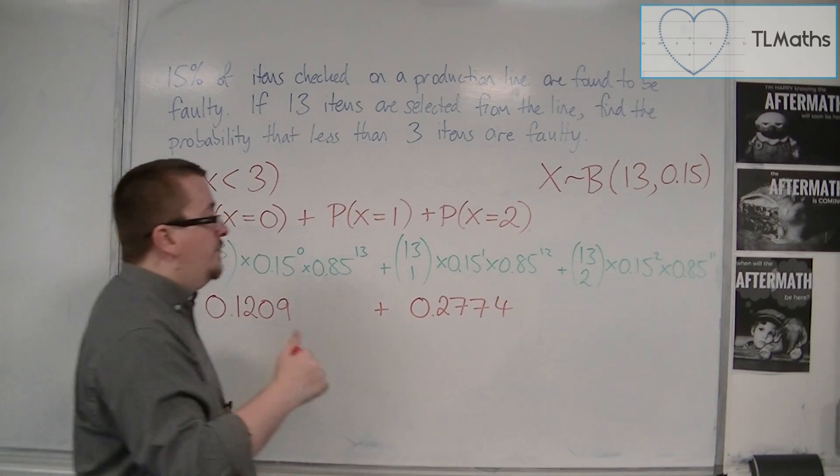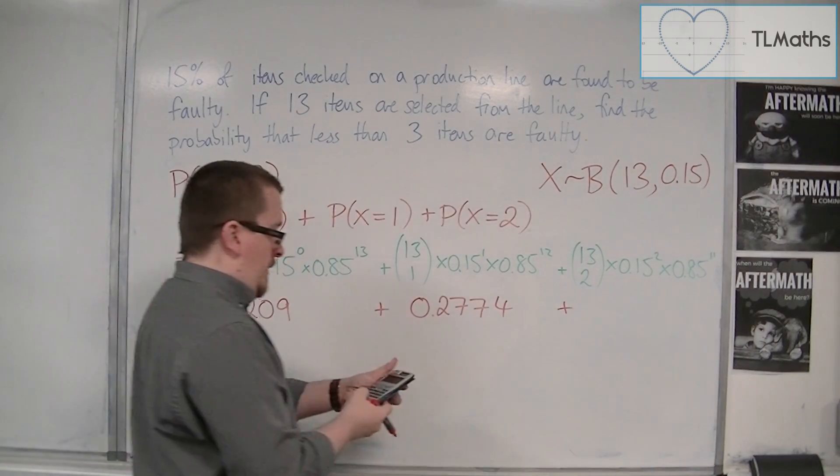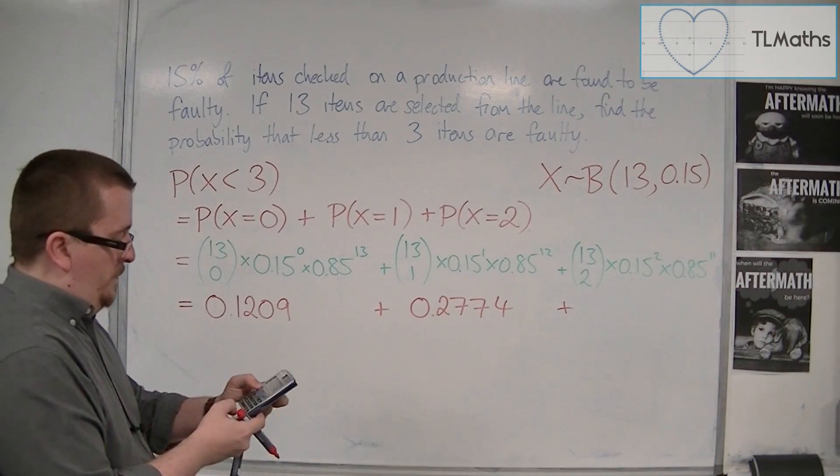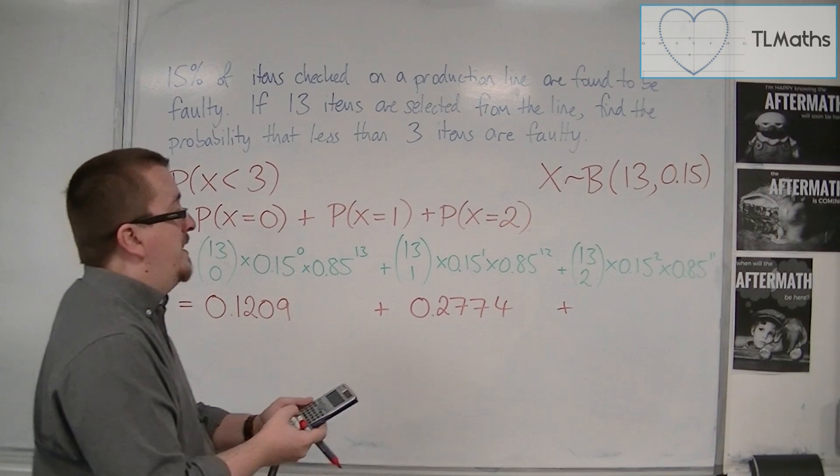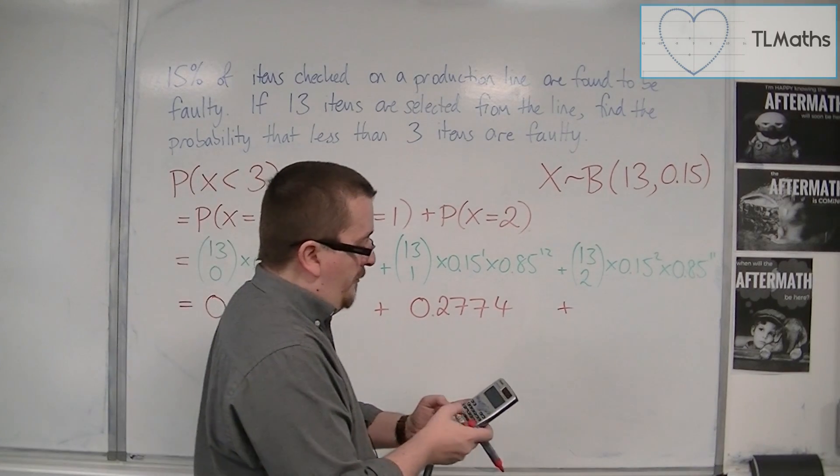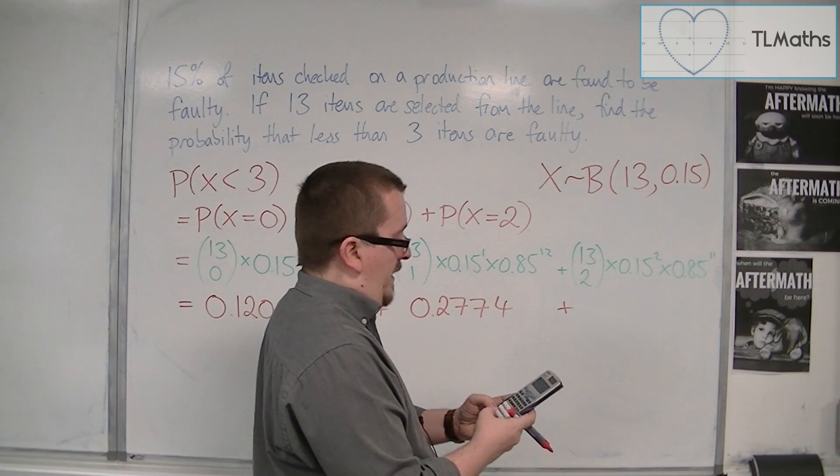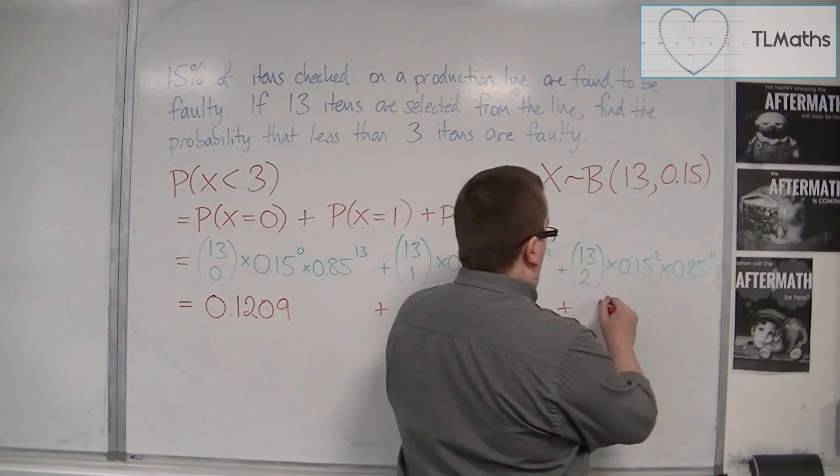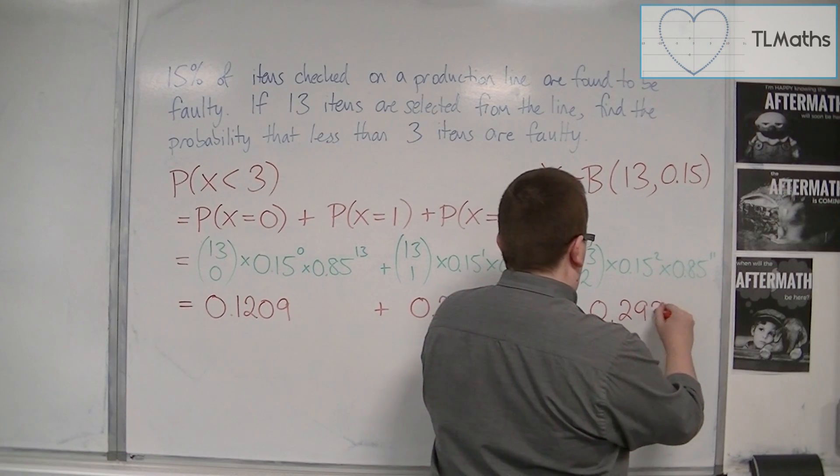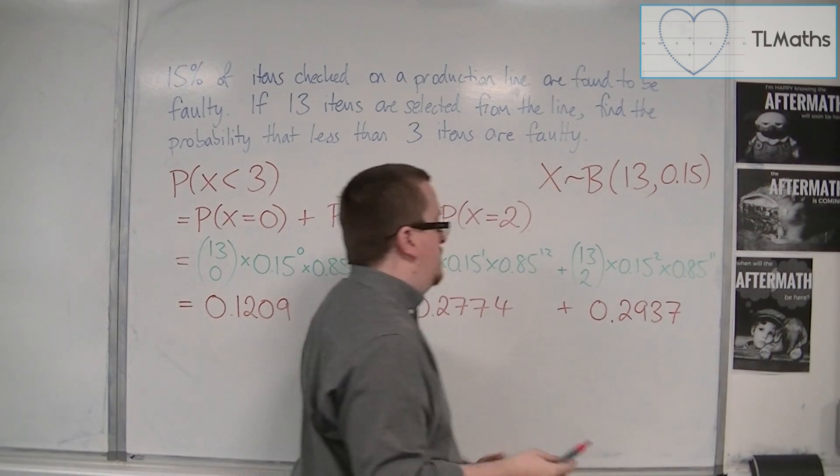Plus 13 NCR 2, which is 78, times 0.15 squared, times 0.85 to the power of 11. And that's 0.2937 to 4 decimal places.